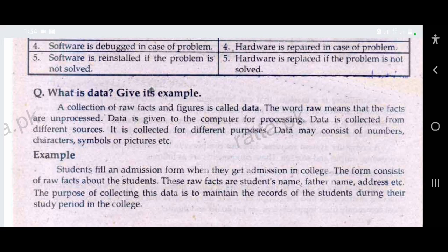A collection of raw facts and figures is called data. The word 'raw' means that the facts are unprocessed. Data is given to the computer for processing. Data is collected from different sources for different purposes.